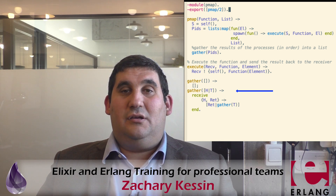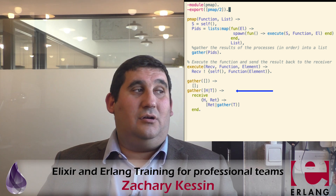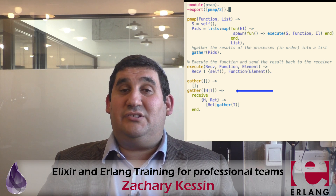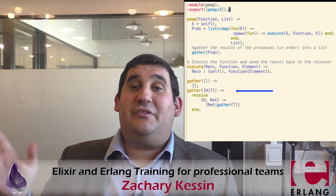So what we're going to do is use the gather function to receive results in order. You can see that we take the first item off the list of PIDs and wait, in the receive, for an element to match that. Then we take the next one, and the next one. That way, no matter what order processes finish, they always come out correctly because we pattern match through the list to get the right order — it sort of magically falls out.